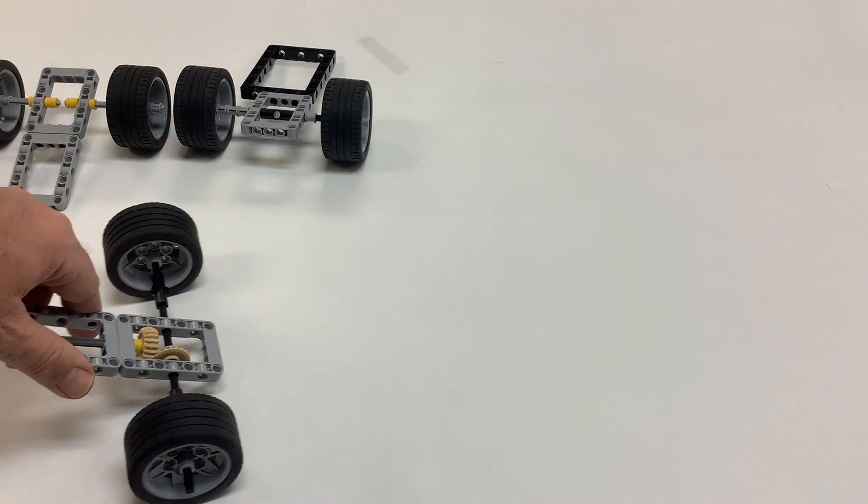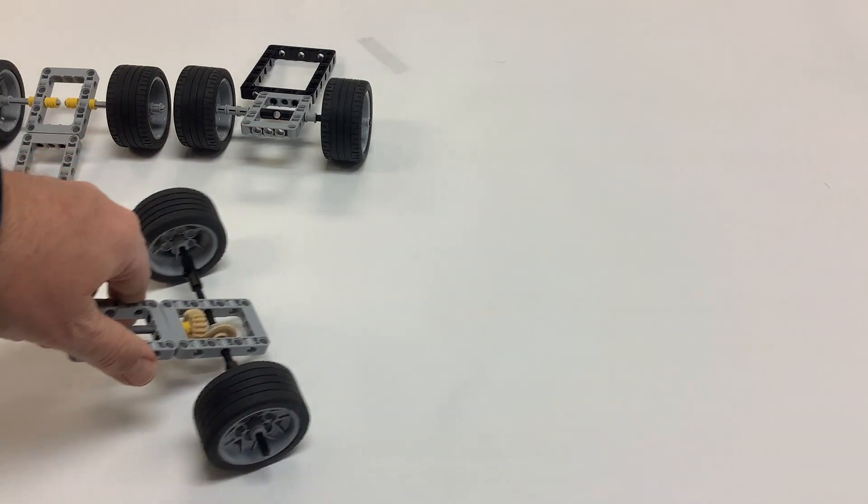So this also clearly has the same problem with the other one is that as you're turning, going around a corner, one of those wheels is going to slip.